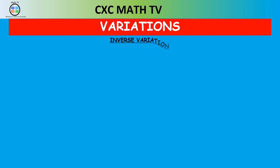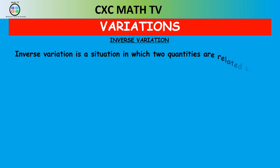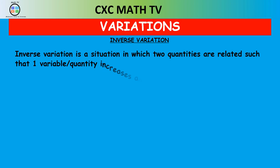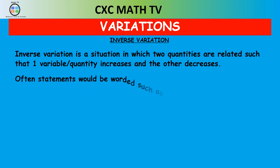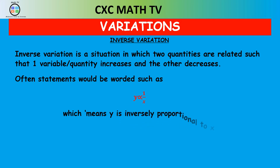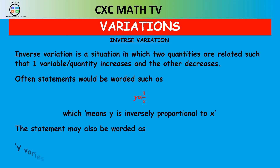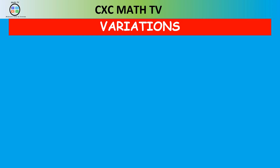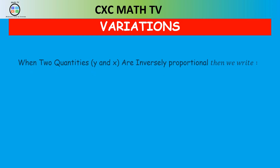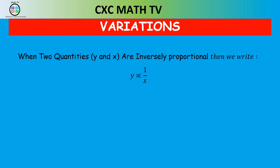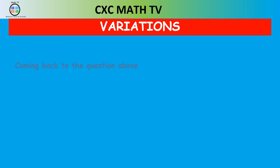Inverse variation is a situation in which one quantity is increasing while the other is decreasing. Symbolically, y is proportional to 1 over x, meaning y is inversely proportional to x. Some may write 'y varies indirectly or inversely as x.' When two quantities y and x are inversely proportional, the equation is y equals k over x, where k is the variation constant.